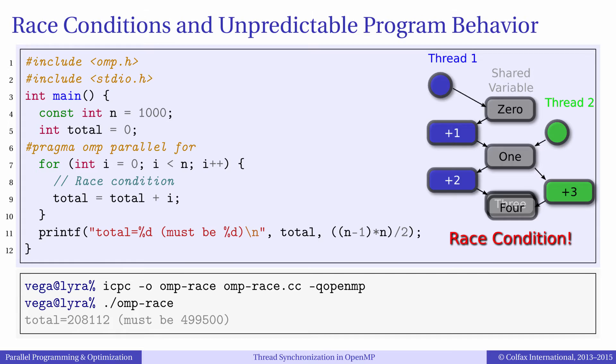When a parallel code allows multiple threads to perform write operations on the same memory address, this code is said to have a race condition. This is a race in the sense that the slower thread gets its result recorded and the faster threads get their results discarded. Race conditions generally lead to incorrect and unpredictable results so they must be avoided.